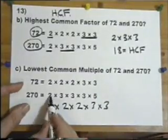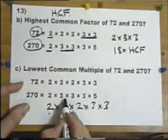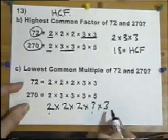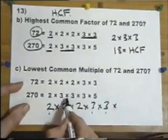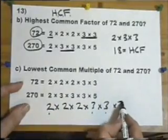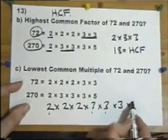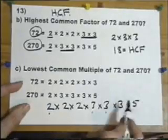Now, looking at this, I've already got 2. I've already got 3 times 3. But I'm going to need 3 times 3 times 3. And I'm also going to need 5. In other words,